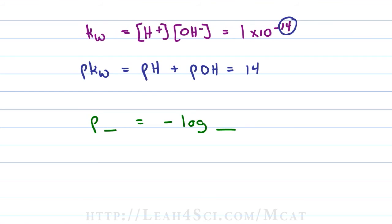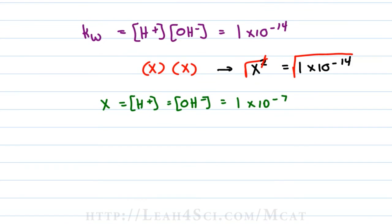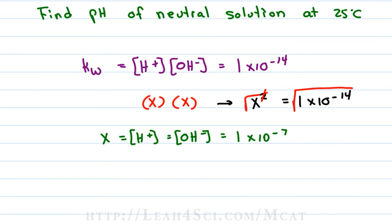Now this is a very useful equation because if you're ever given an OH- concentration and you need a pH, or an H+ concentration and you need a pOH, you simply take what you have, take the p of that so you get your pH or pOH, and then do 14 minus what you have to find the other one.